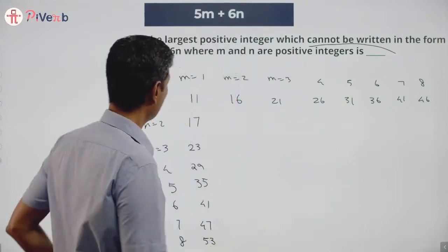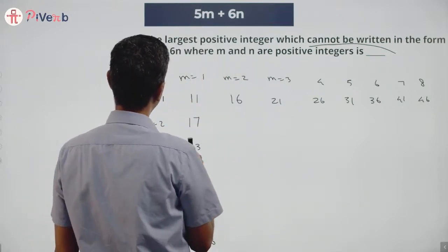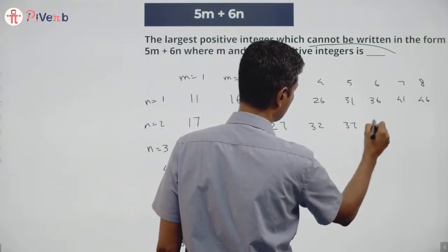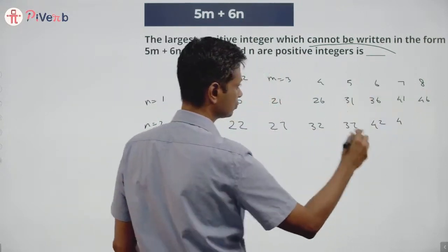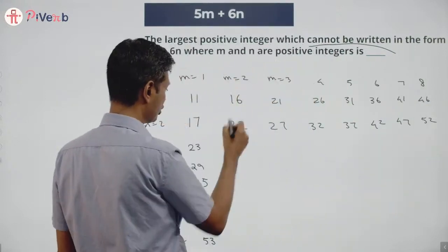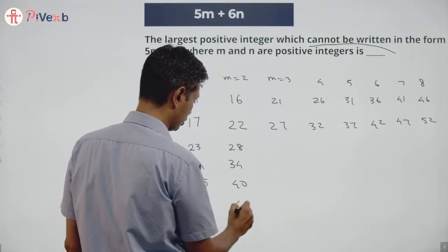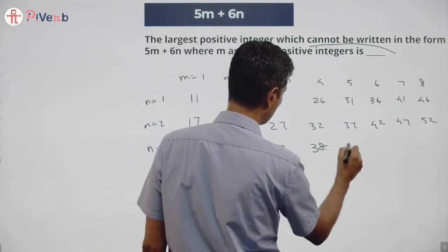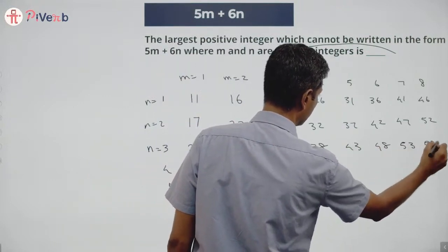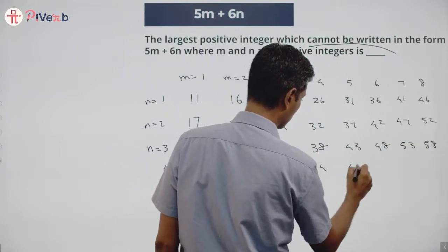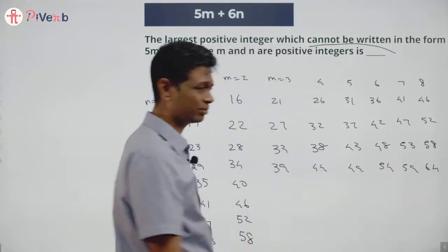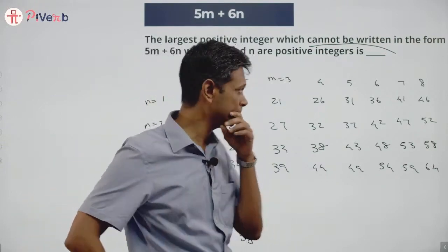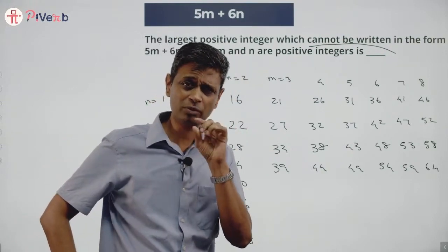I can do even better: m=2, n=2 gives 22, then 22+5=27, 32, 37, 42, 47, 52... and m=2, n=2 another way: 16, 22, 28, 34, 40, 46, 52, 58 and so on. I can fill an entire grid of possible numbers. Some numbers are still not possible, but a pattern is emerging.